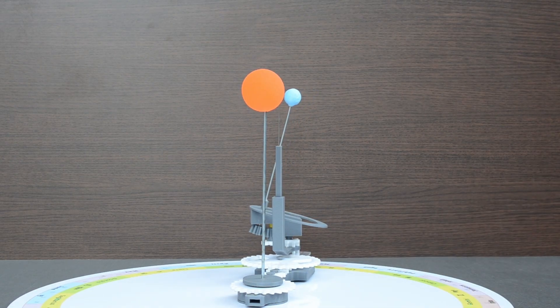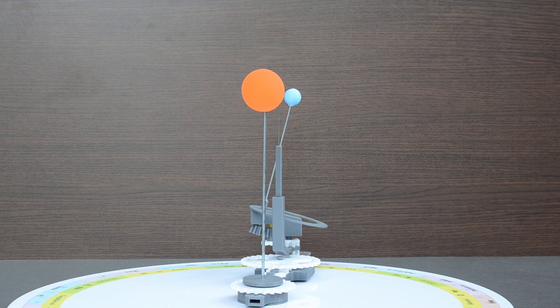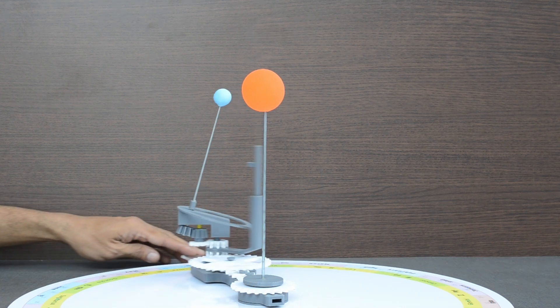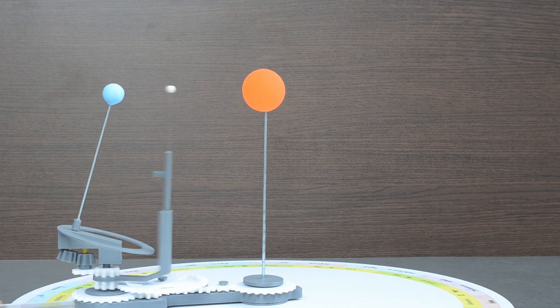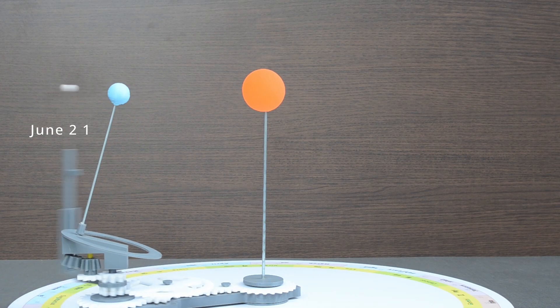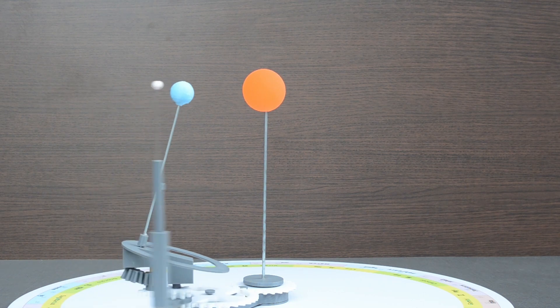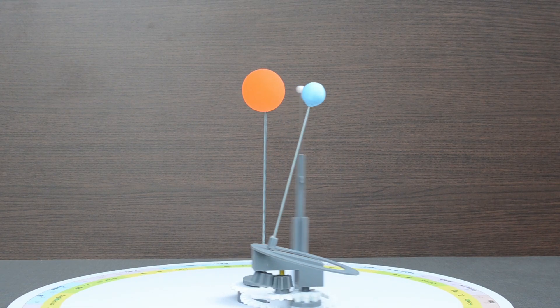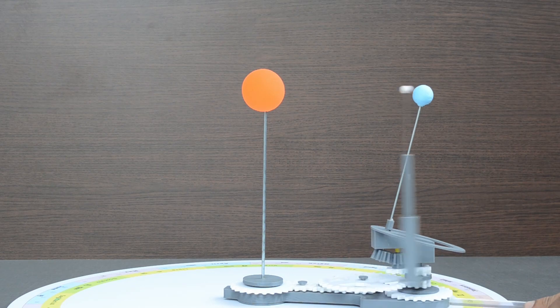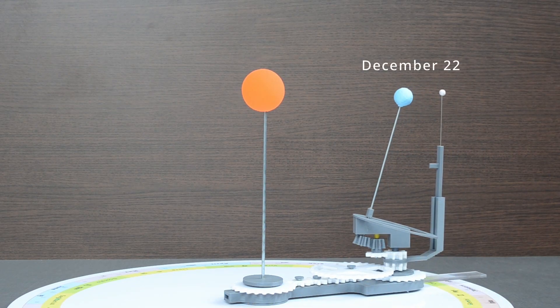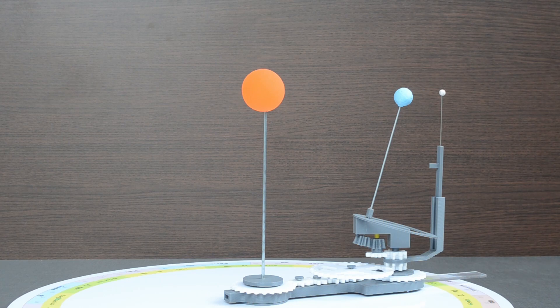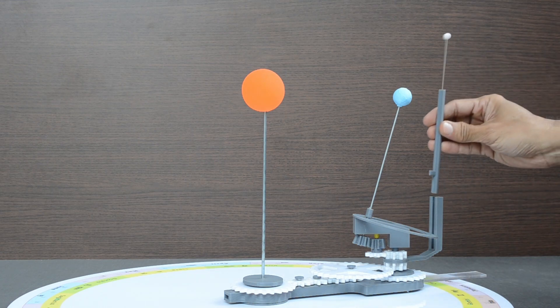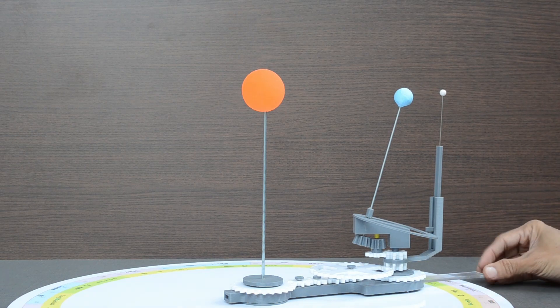Earth's axis is positioned as per the four key positions during the year: 21st March, 21st June, 23rd September, and 22nd December.